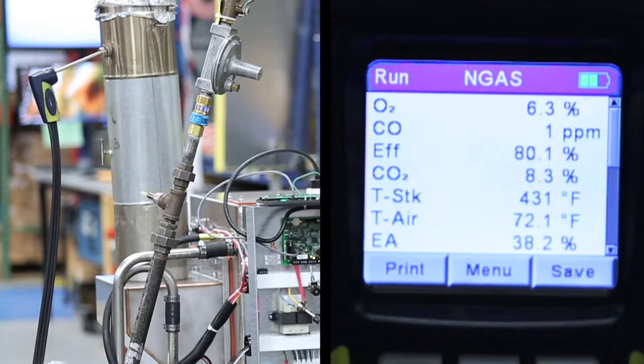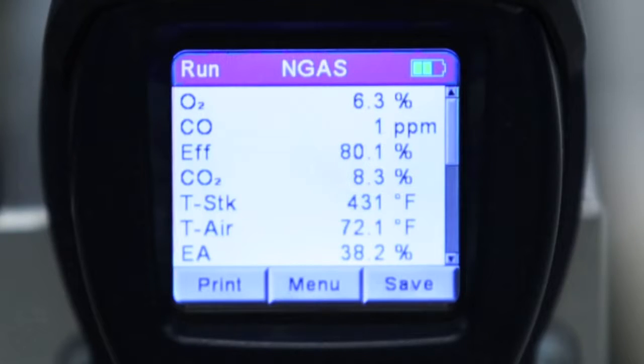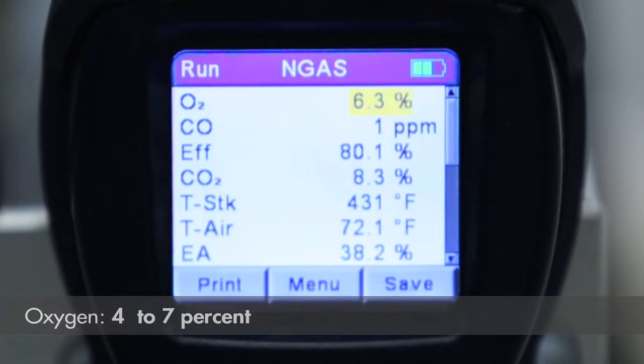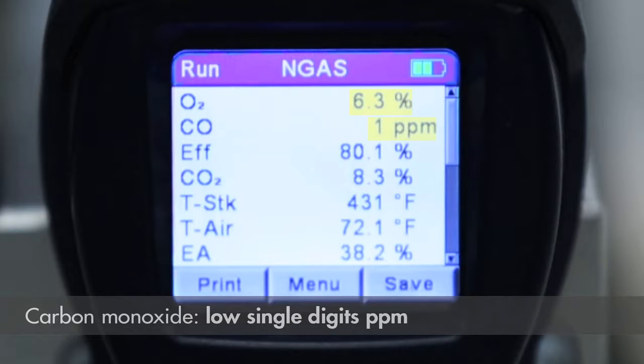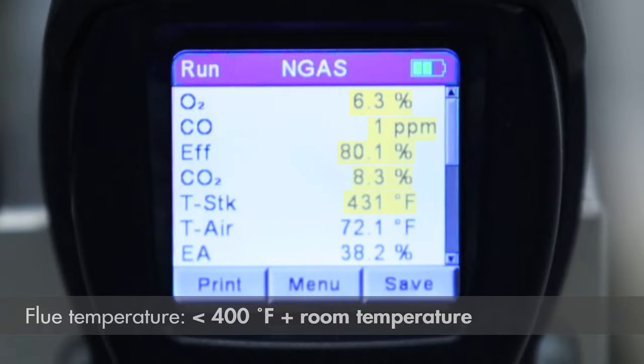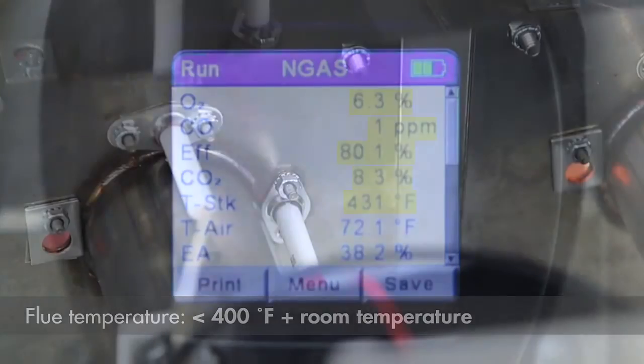Give the analyzer a few minutes to display a steady set of values and verify the following. Oxygen 4 to 7%. Carbon monoxide parts per million in the low single digits. 40 parts per million or above is excessive and must be corrected. Burner efficiency higher than 80%. Carbon dioxide 8 to 10%. And flue temperature less than 400 degrees Fahrenheit plus room temperature.